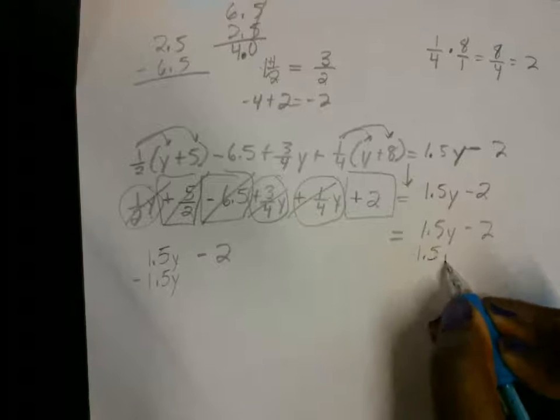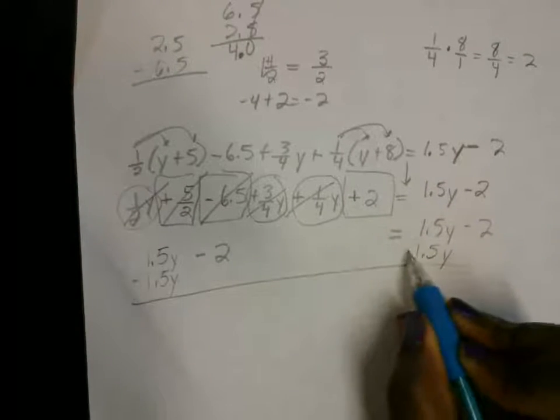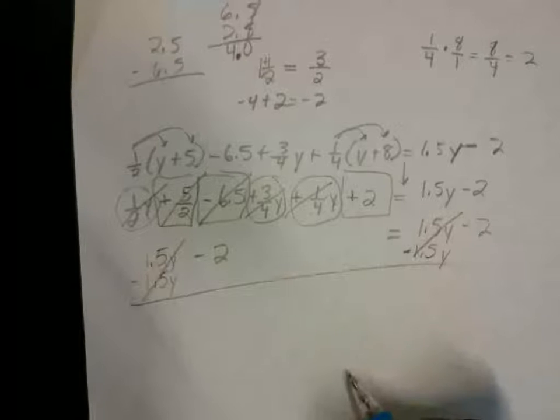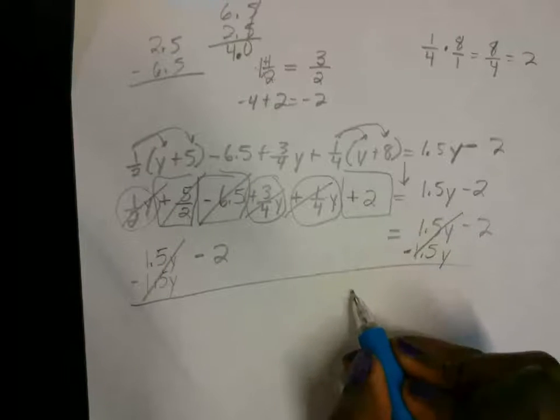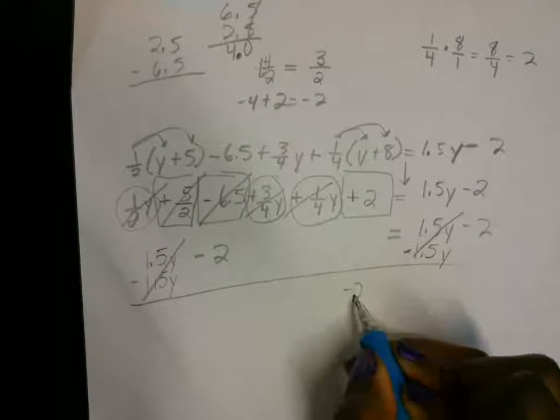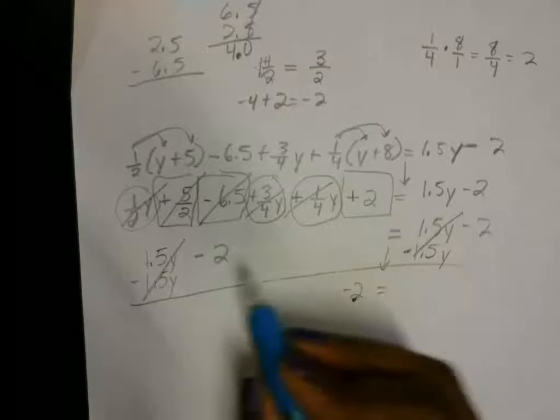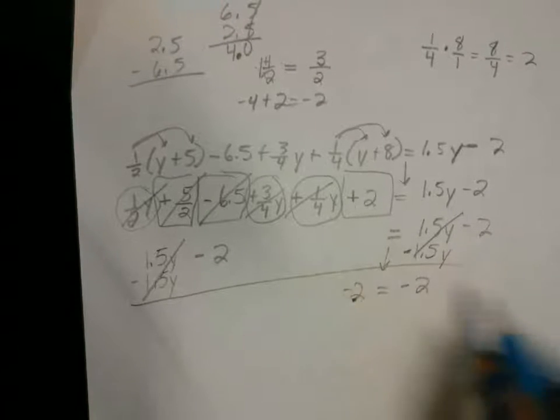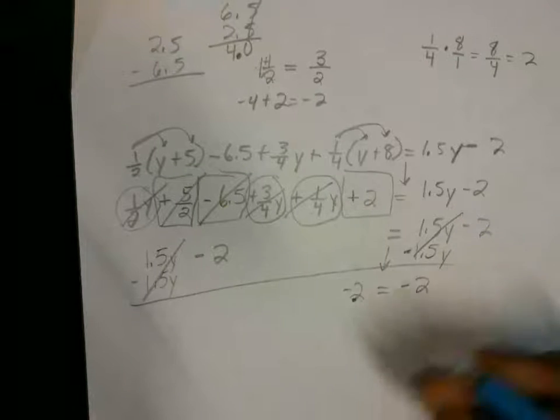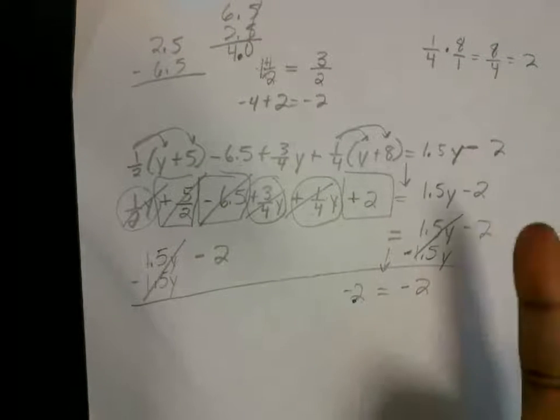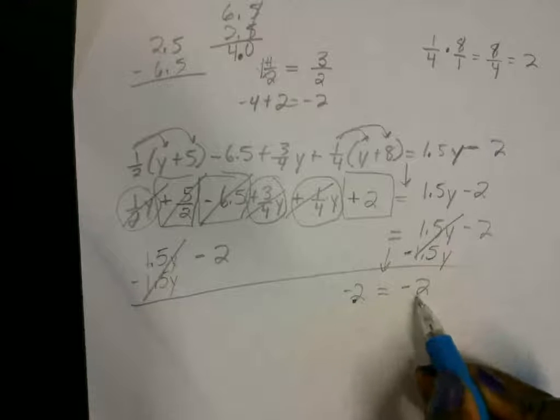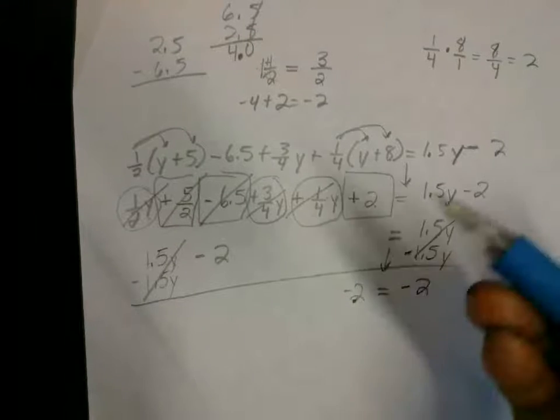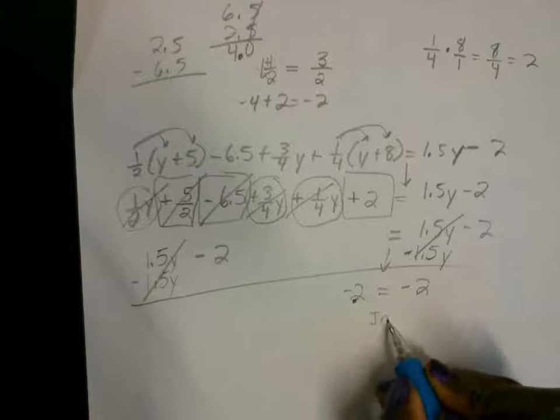The y's cancel out. So when the y's cancel out, this gives me negative 2 here on this side, and this gives me negative 2 on this side. Since the y's cancel out, that means we're not going to get just one answer. But since both sides are equal to each other, that means any answer would work. So this is infinitely many solutions.